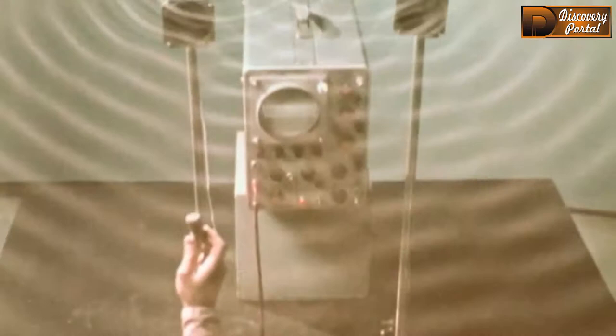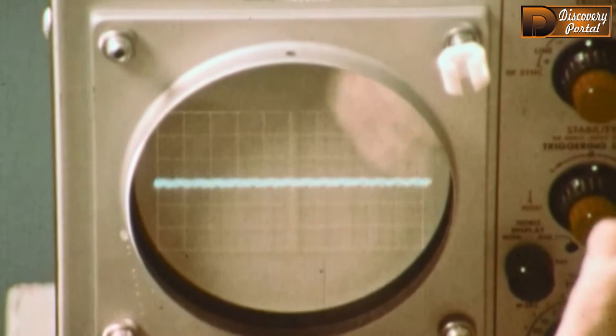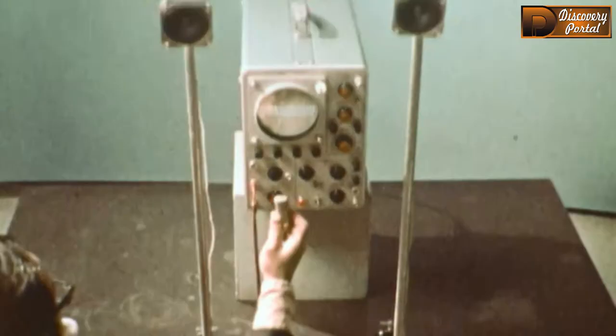These two speakers send out pure sound waves of identical frequency and amplitude. The microphone records areas of calm and motion. If we could see the three-dimensional interference pattern caused by the two sound sources, it would look like this.